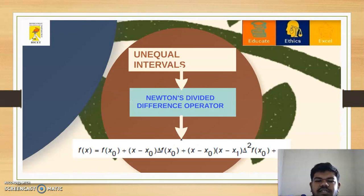Next, we will discuss for unequal intervals. When the table value is in unequal intervals, we can use Newton's divided difference operator. The formula is f(x) = f(x₀) + (x - x₀)Δf(x₀) + (x - x₀)(x - x₁)Δ²f(x₀) + ...